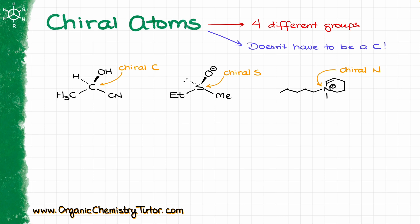So here I have three different examples: an example with chiral carbon, an example with chiral sulfur, and an example with chiral nitrogen. Notice that in the case of the chiral sulfur, we have an electron pair, and we can absolutely count that as an electron group around the sulfur for the purposes of the group count.